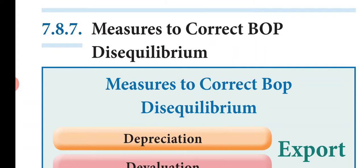In this video, we are going to know about what are the measures to correct balance of payment disequilibrium. Balance of payment disequilibrium — that is called a measure to correct BOP disequilibrium.